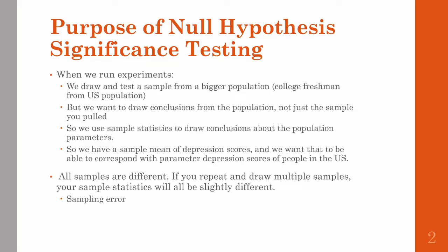When we run experiments, we draw a sample from a bigger population — so college freshmen from the broader U.S. population. But our purpose in research is not just wanting to describe our sample, but wanting to make conclusions on the bigger population. So we use sample statistics from our sample to make conclusions about population parameters.